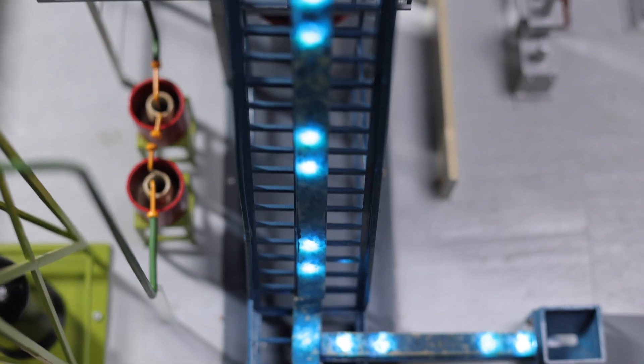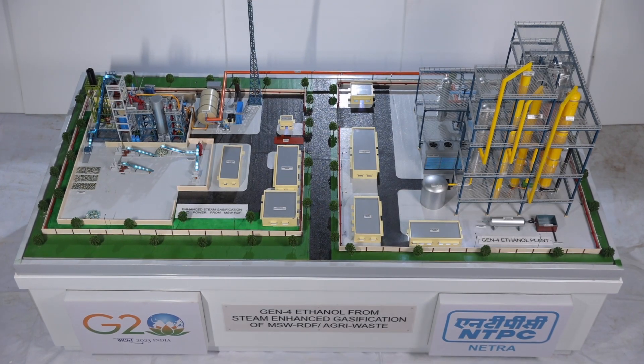The process of gasification of MSW RDF is divided into 6 different sections: Preparatory, Gasification, Gas Cleaning, Engine, Utility, and Auxiliary.